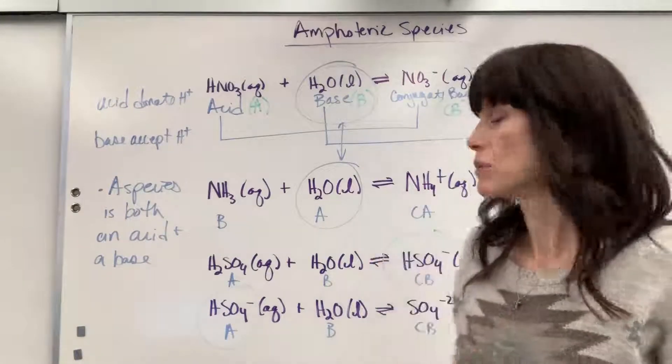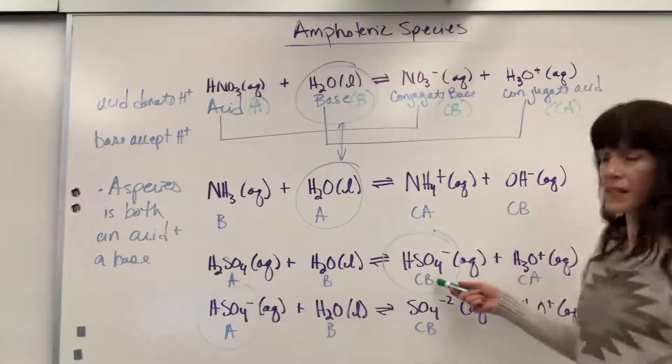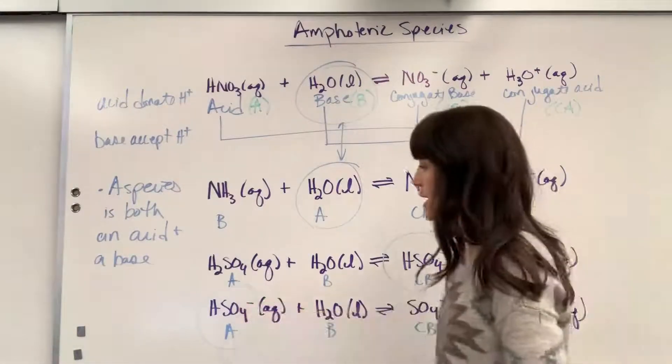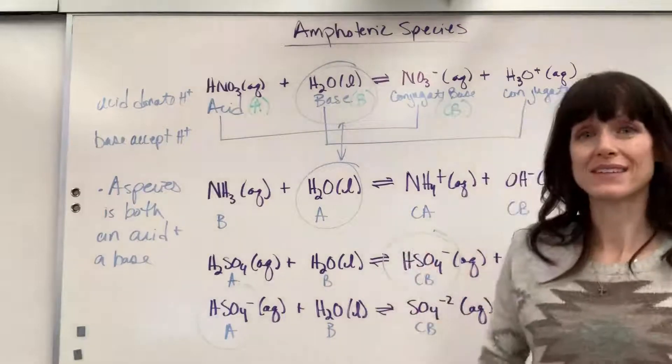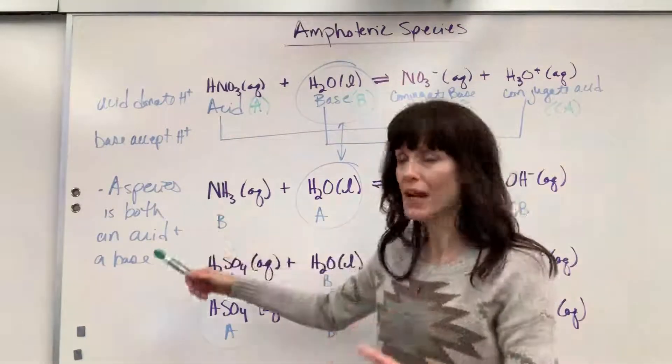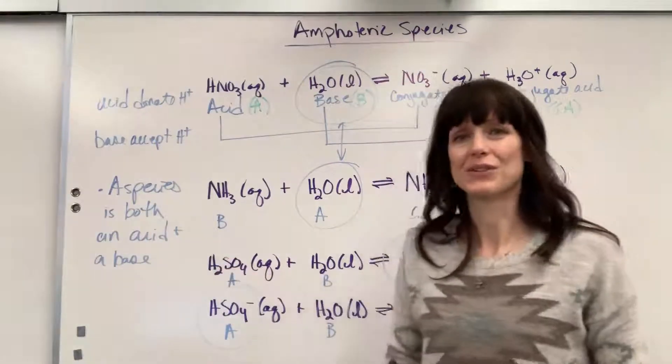Donate acid, accept would be the base. And it doesn't matter that the word conjugate is in front of that. This is a base, that's an acid. So hydrogen sulfate is an amphoteric species. It can act, depending on the reaction, it can act as either an acid or a base.